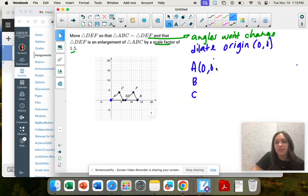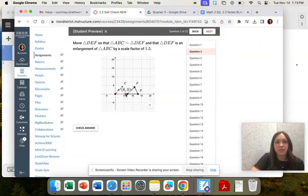So A is (0,0), B is (6,0), and C is (4,4).